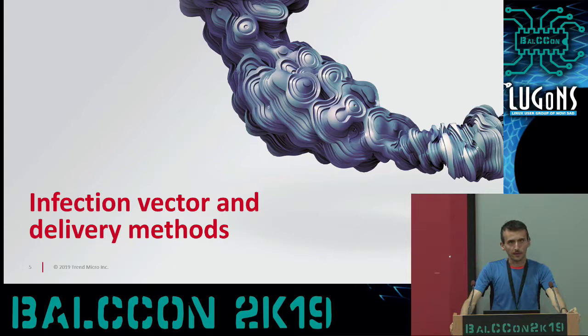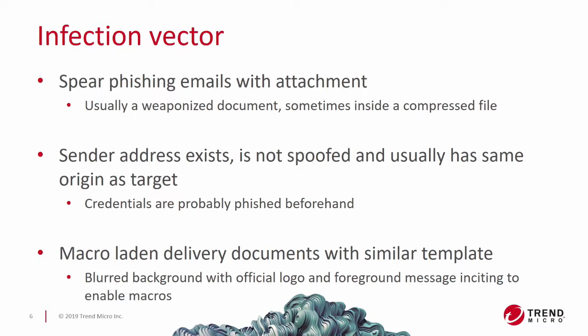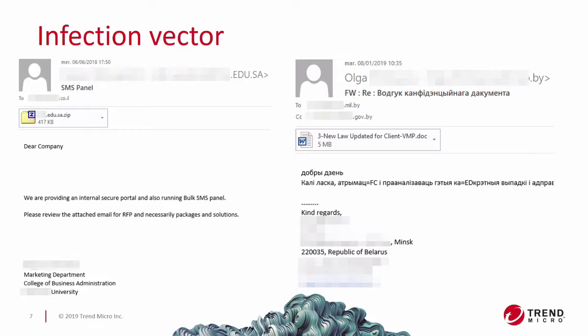The infection vector - how this threat actor spreads their malware - is not surprisingly spear phishing. They send emails with some attachment to the victims. Usually, if they try to target a victim in one country, they use compromised emails from other organizations in the same country so it looks less suspicious. These are screenshots of these emails - you can see one on the left, another on the right.